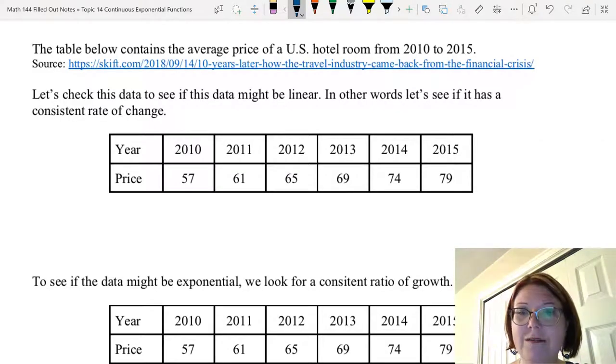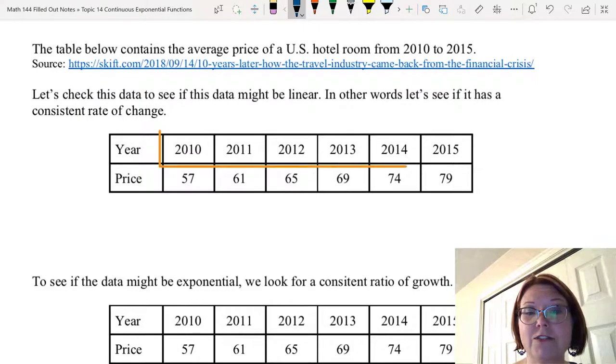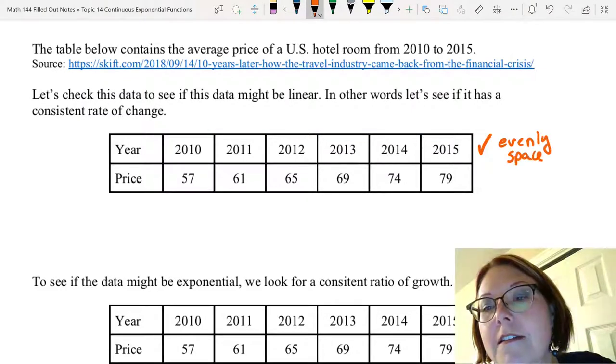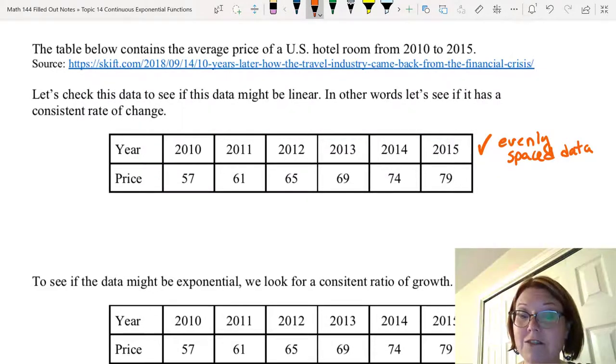Let's try another problem. In this table of data, we have the average price of a US hotel room from the years 2010 to 2015. First, let's check to see if the data might be linear. In other words, let's see if it has a consistent rate of change. Before we do that, we'll check the data to make sure that it is evenly spaced. The top row of data is years from 2010 to 2015 evenly spaced by year.